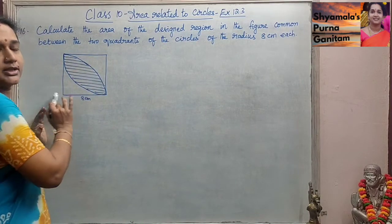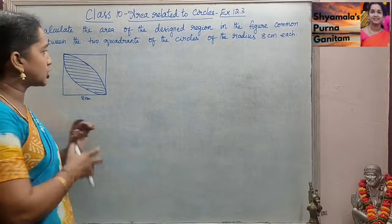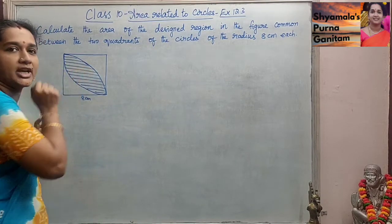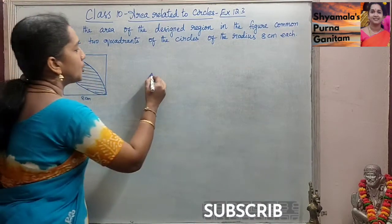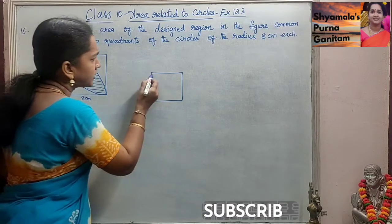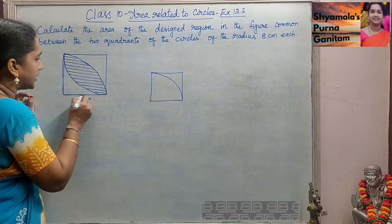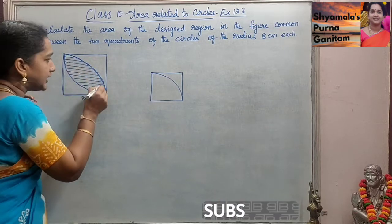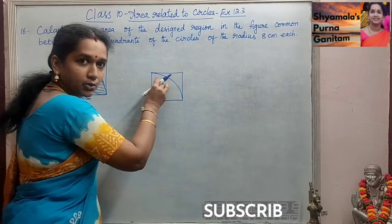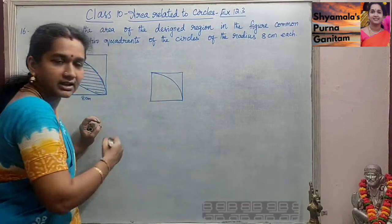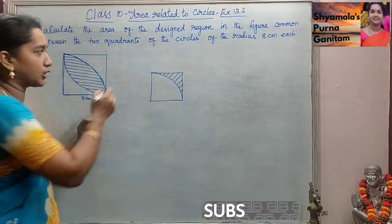So the information given is that the side of the square is 8 cm, and we are asked to find the area of this shaded region. For finding the area of the shaded region, we will take the square and this quadrant. We will find the area of the square and the area of the quadrant; when we subtract this, we will get the area of this shaded region. This is the first step.